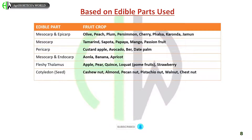Aggregate fruits include: etaerio of berries in custard apple, etaerio of achenes in strawberry, etaerio of drupelets in blackberry. Classification based on edible parts of fruits: mesocarp and epicarp is edible in olive, peach, plum, persimmon, cherry, falsa, karonda, and jamun. Only mesocarp is edible in tamarind, sapota, papaya, mango, and passion fruit. Pericarp is edible in custard apple, avocado, bael, and date palm. Mesocarp and endocarp is edible in amla, banana, and apricot. Fleshy thalamus is edible in apple, pear, quince, loquat, and strawberry.